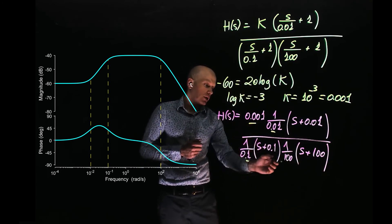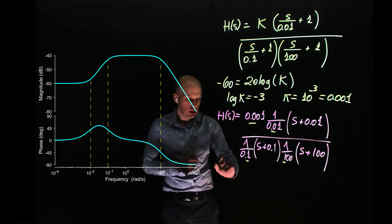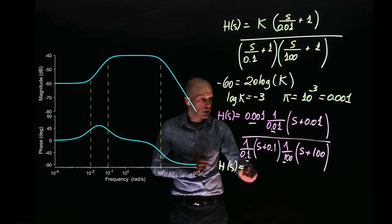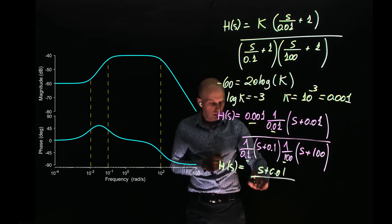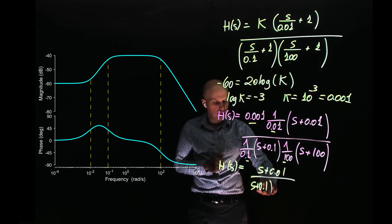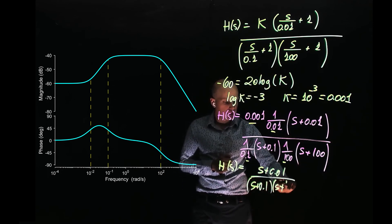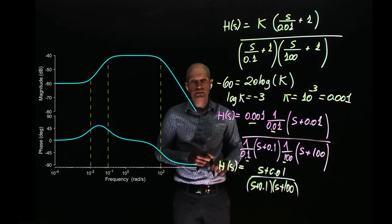These terms multiplied together will give: h of s is simply s plus 0.01 over s plus 0.1, times s plus 100.